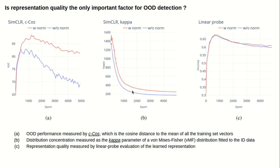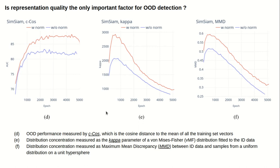Here we repeat the same experiment but for SimSiam, a non-contrastive self-supervised learning technique. We can see a different picture: the OOD performance remains nearly constant even after very long training, and the concentration of the distribution remains high even after 5000 epochs.